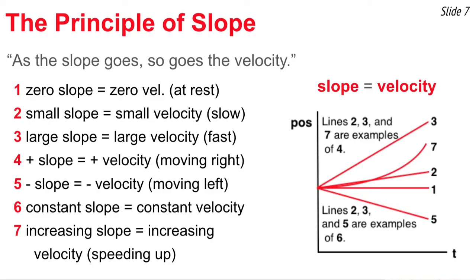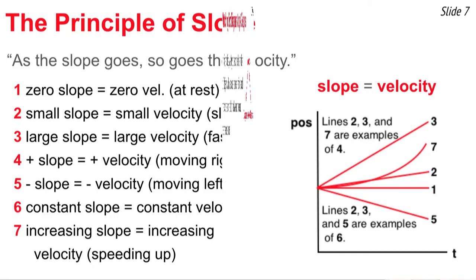As the slope goes, so goes the velocity. Lines 2, 3, and 7 have positive slopes, so those are objects with positive velocity — maybe moving to the right. Lines 1, 2, 3, and 5 all have constant slopes, so those are objects moving with a constant velocity.